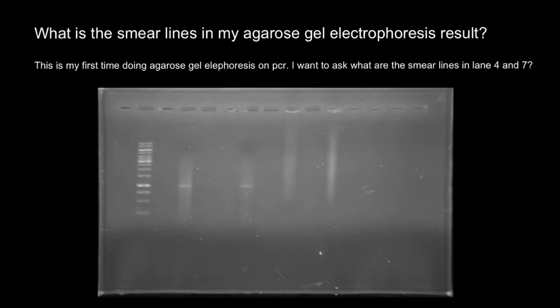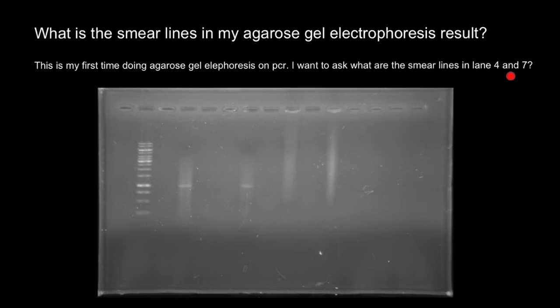Hello and welcome to Nikolai's Genetics Lessons, and here's the question of the day. This is my first time doing agarose gel electrophoresis on PCR. I want to ask what are the smear lines in lane 4 and 7.